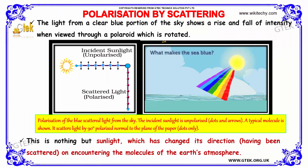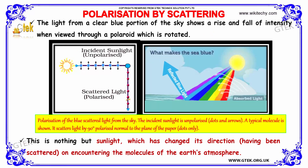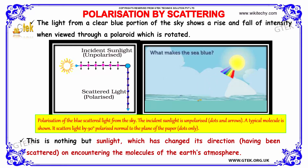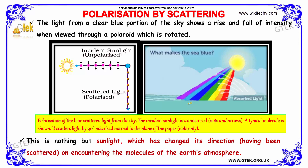The light from a clear blue portion of the sky shows a rise and fall of intensity when viewed through a rotating polaroid. This is sunlight which has changed its direction on encountering the molecules of the earth's atmosphere.